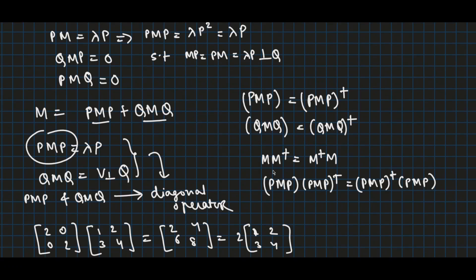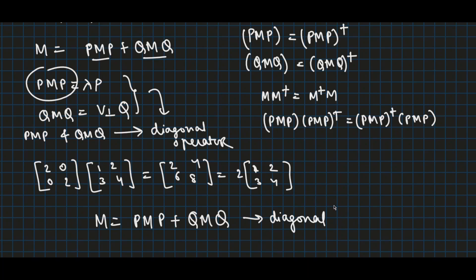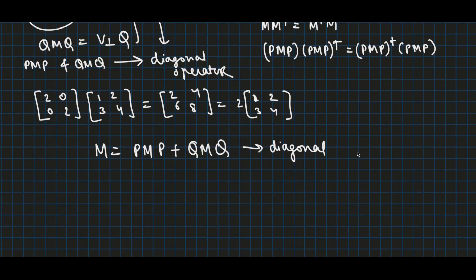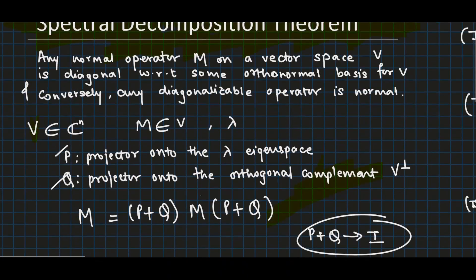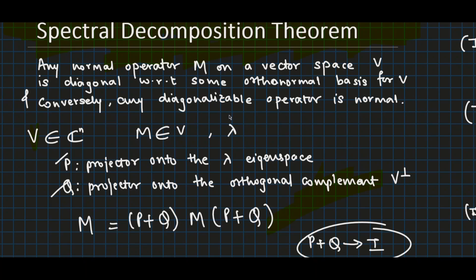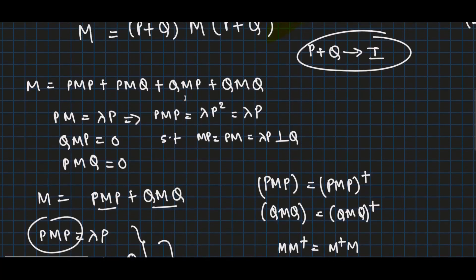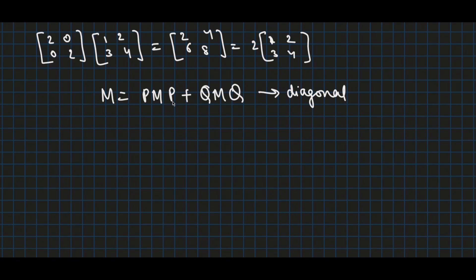Since PMP and QMQ are both normal and diagonal, it follows that M, which equals PMP plus QMQ, is also a diagonal operator with respect to some orthonormal basis of the total vector space V. Hence we have proved the spectral decomposition theorem: any normal operator M on a vector space V is diagonal with respect to some orthonormal basis of V. The converse — that any diagonalizable operator is normal — can also be easily shown from these operations.